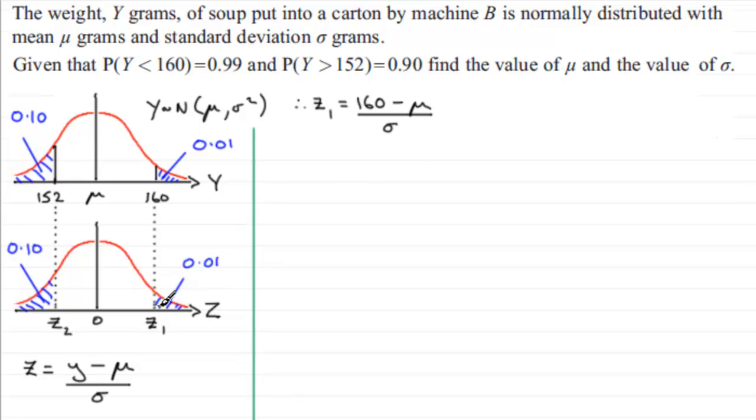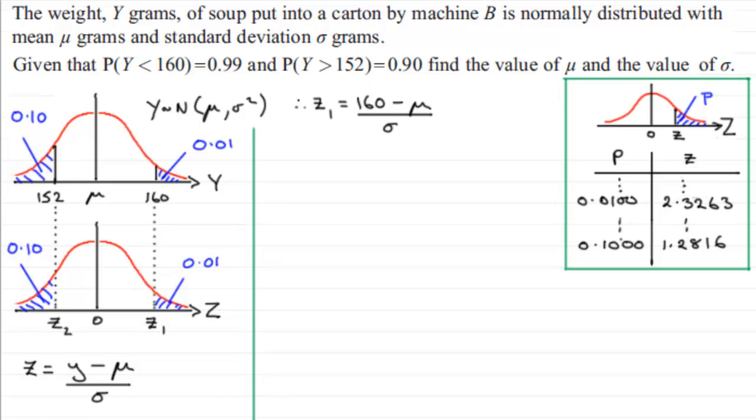So how do we get the values of Z1, and similarly Z2 as well? Well, we've got to turn our attention to the inverse normal tables, which I've drawn up here. You should have a set of these tables in your formula book. Quite often you get a sketch something like this, where it gives you the probability P of being more than a value of Z, which is to the right of zero.